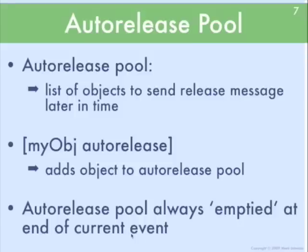The auto-release pool is basically an object which has a list of other objects that it's going to send the release message to at some point later in time. You add an object to the auto-release pool using the auto-release method, which is a method on the NSObject base class. So any object that you have, when you pass the auto-release message, it causes the object to add itself to the auto-release pool.